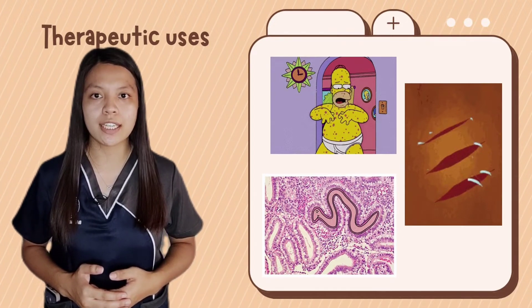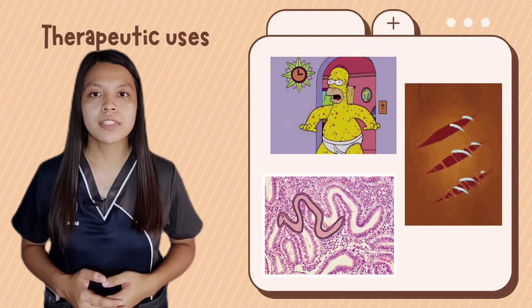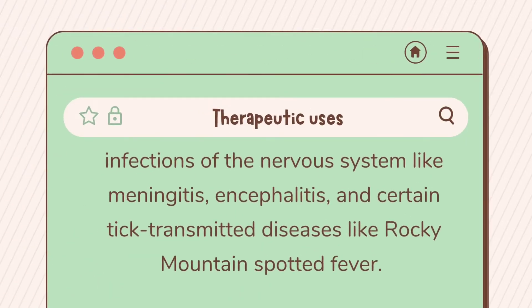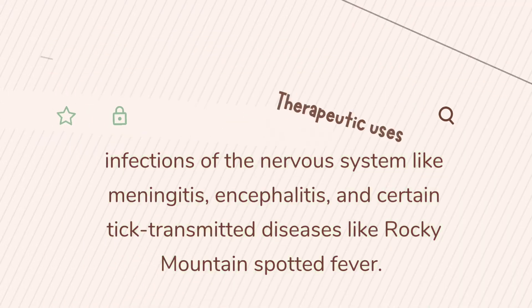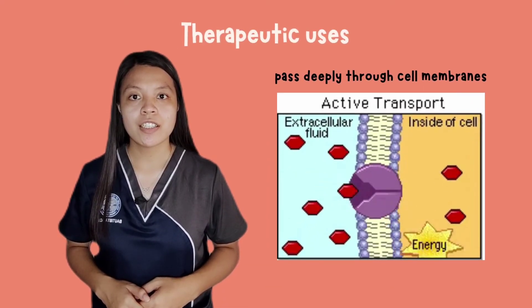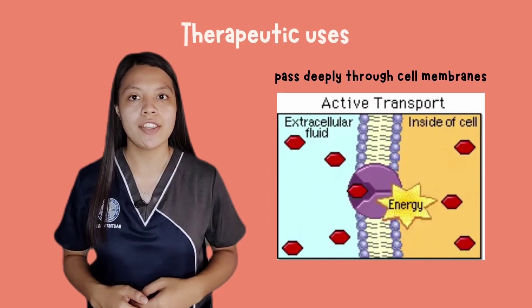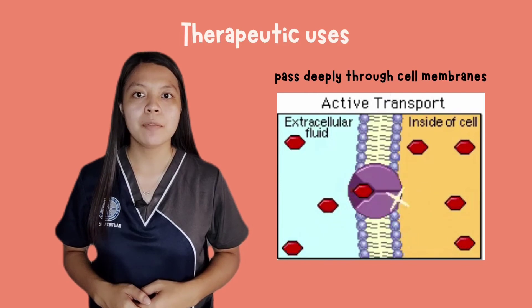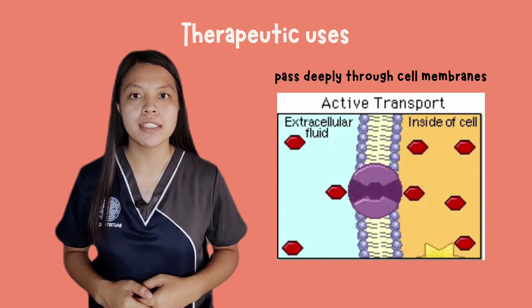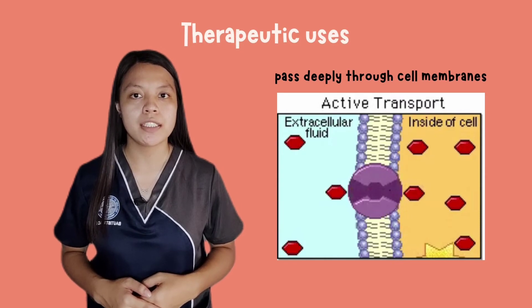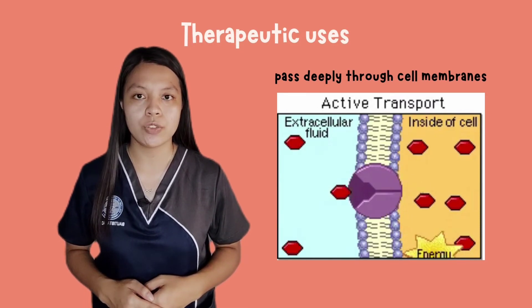It is also used to treat pneumonia in dogs and cats. It can also be effective against infections like meningitis and certain tick-transmitted diseases like Rocky Mountain spotted fever. In many cases, chloramphenicol is preferred over other antibiotics, as it can pass deeply through cell membranes and purulent material to attack bacteria residing in places other antibiotics cannot reach.